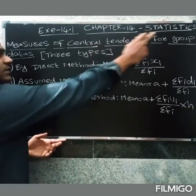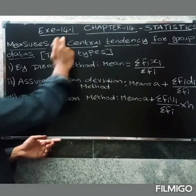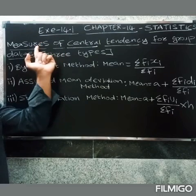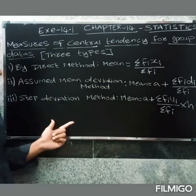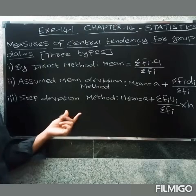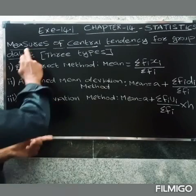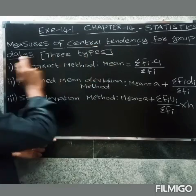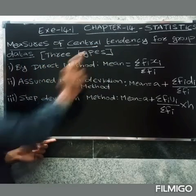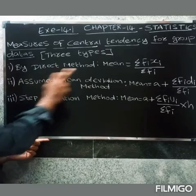Welcome friends. In chapter 14, statistics, exercise 14.1 — we are going to explain what the formulas are. The three formulas are easy to explain. So, measures of central tendency for grouped data. There are three types of statistics. The first is the direct method.